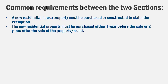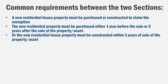The first requirement is that you must invest in a new residential house property. You can purchase that property 1 year before or 2 years after the date of sale. For example, if you sold an asset on 1st April 2018, you can buy a house 1 year before or 2 years after that date. If you are constructing a house, the government allows 3 years from the date of sale to complete construction.